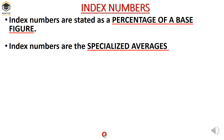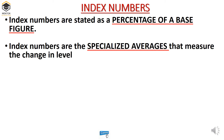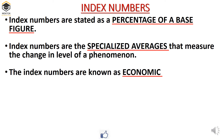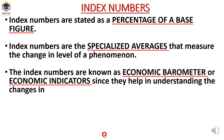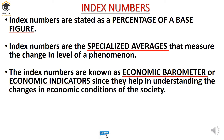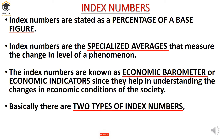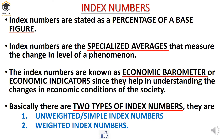Index numbers are the specialized averages that measure the change in level of a given phenomenon. Index numbers are also known as economic barometer or economic indicator since they help in understanding the changes in economic condition of the society or the country. Basically there are two types of index number: unweighted or simple index number, and weighted index number.